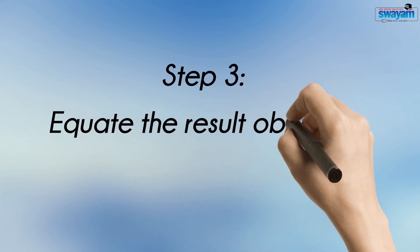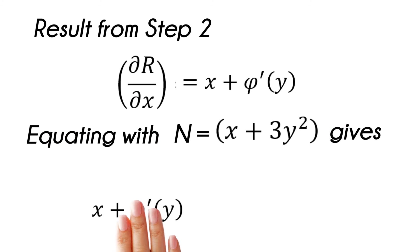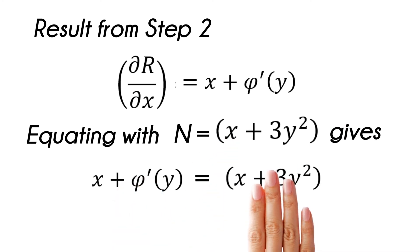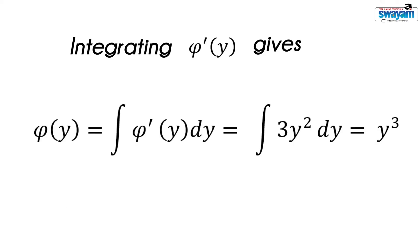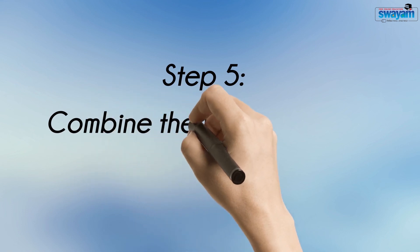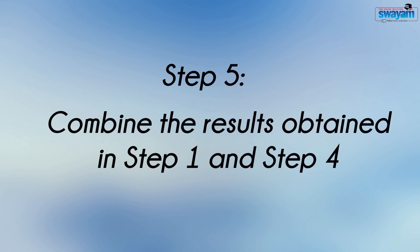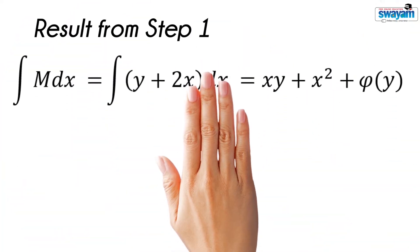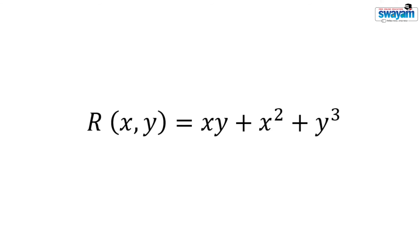Equating the result obtained in step 2 with N gives this result. Integrating phi-dash y gives this result. Combining the results obtained in step 1 and step 4 gives R of xy is equal to xy plus x squared plus y cubed.